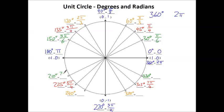Continuing: the next would give us 7π/6, and the next would be 8π/6, which simplifies to 4π/3. Nine π/6 is the same as 3π/2. Ten π/6 simplifies to 5π/3. Next, we get 11π/6, and last but not least, 12π/6, which is 2π — back where we started.